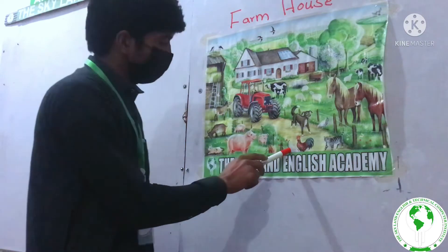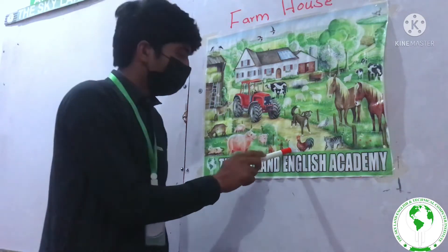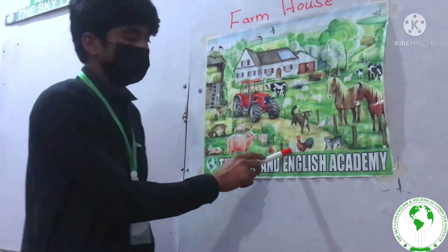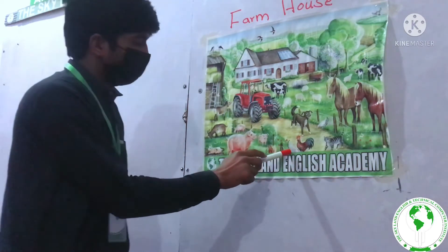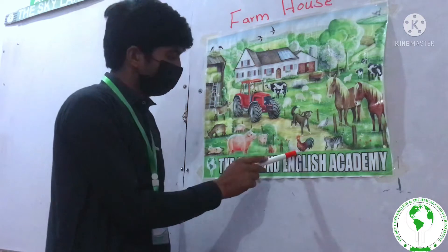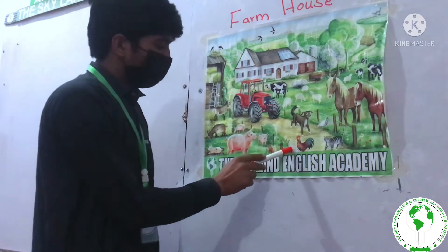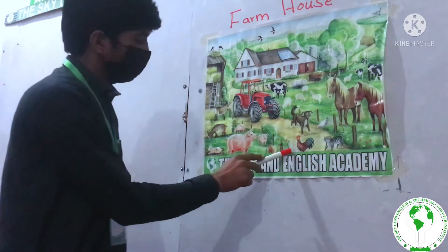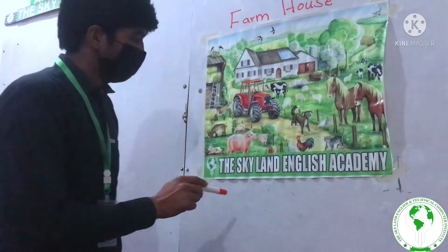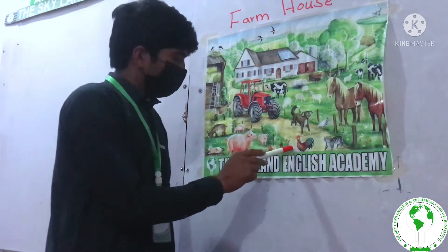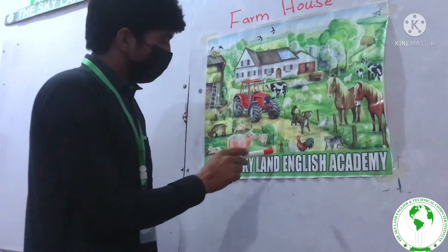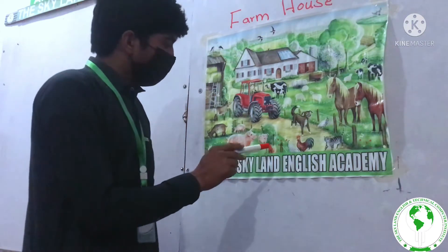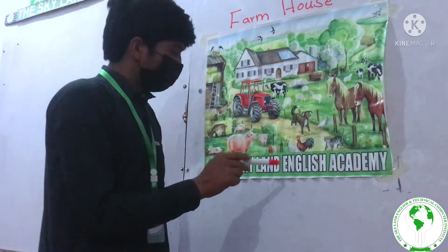This is the hen, and the hen is of multiple colors — like red color, white color, and black color. This hen is eating the food.